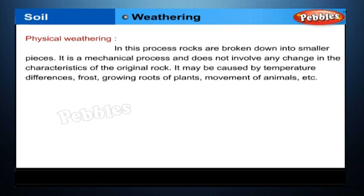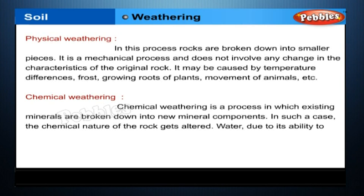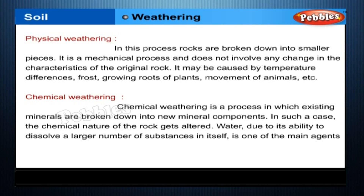Chemical weathering is a process in which existing minerals are broken down into new mineral components. In such a case, the chemical nature of the rock gets altered. Water, due to its ability to dissolve a larger number of substances in itself, is one of the main agents of chemical weathering.